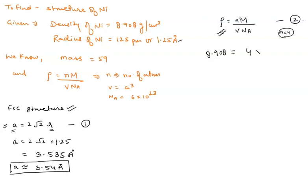We know that 4 into mass of nickel is 59 by V is nothing but A cube, and Na is equal to 6 into 10 to the power 23.